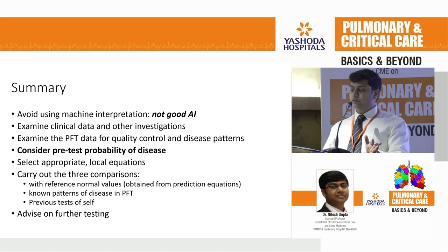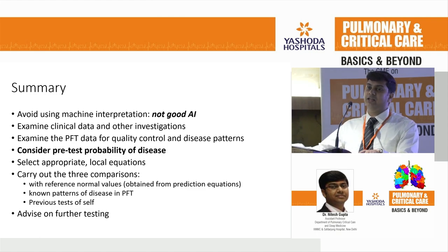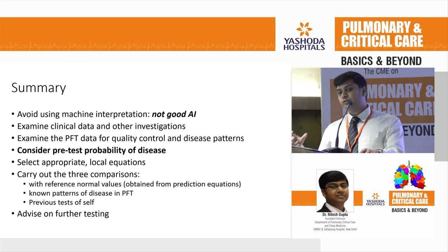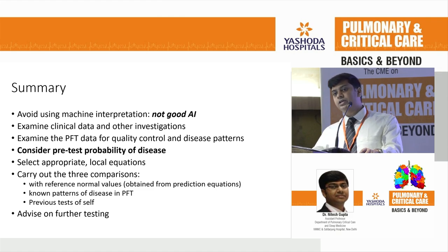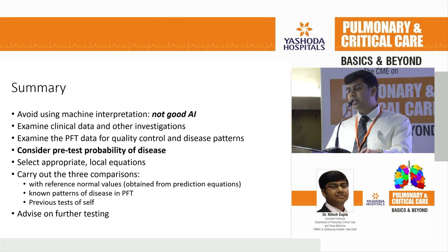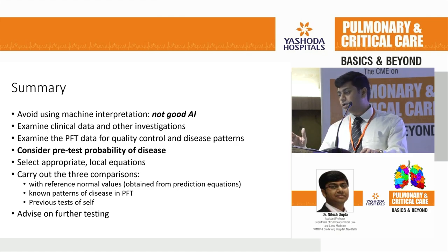Summary: First, avoid using the machine interpretation — do not interpret PFT by the report written on the machine, just as you don't interpret ECG by the machine's report. Always examine clinical data and other investigations first, then examine the PFT for quality control and identify a suspected disease pattern based on clinical history. Consider pre-test probability of the disease, select appropriate local reference equations, carry out three comparisons — with normal predicted values, with known disease patterns, and with previous tests of the same patient. Then advise on further testing with a rationale, not arbitrarily. Have a pre-test probability before ordering investigations. Thank you.